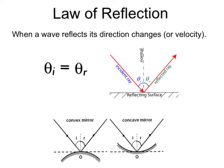The law of reflection: when a wave reflects, its direction changes, or velocity, since that is speed and direction together. The angle of incidence equals the angle of reflection. When we take an incident ray towards a reflecting surface, it reflects off at the same angle. To measure those angles, we need to draw what's called a normal line that is perpendicular to the reflecting surface. Hence, the angle of incidence is measured from the incident ray to that normal line.